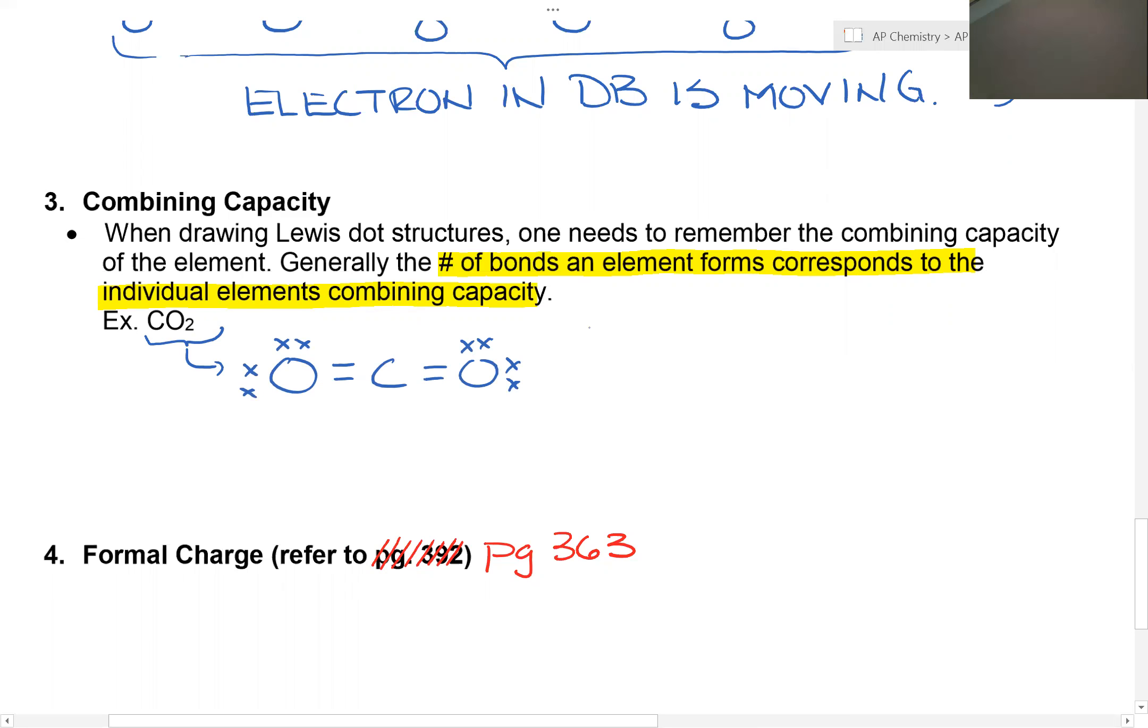You notice there's two, four, six, eight pairs. The question is, why can't we write it like this? We look at it, we see that there's still eight pairs. And all of them, the oxygen, the carbon, and the other oxygen, all have eight electrons. So why is the carbon dioxide drawn on the left, the more accepted structure?